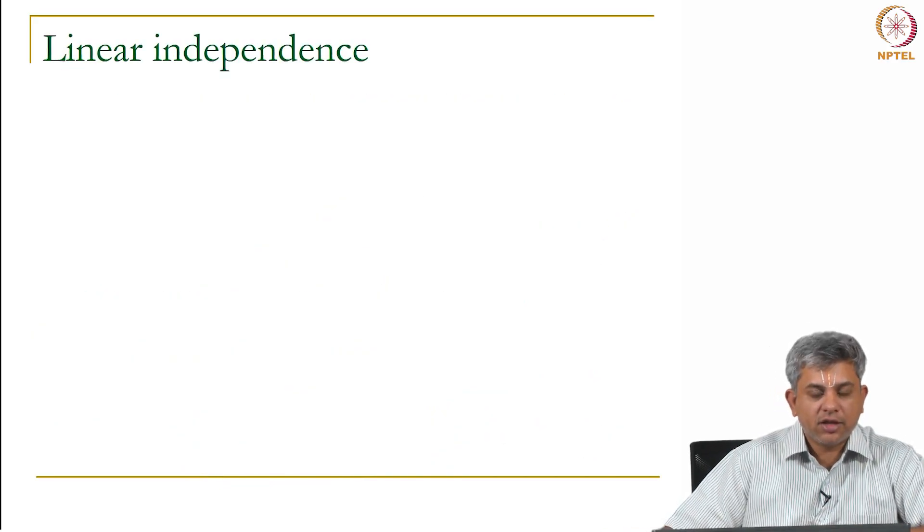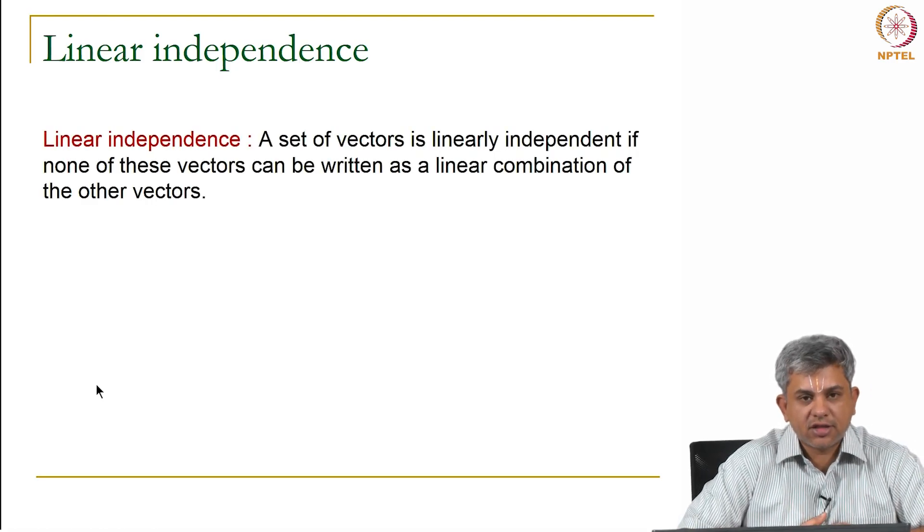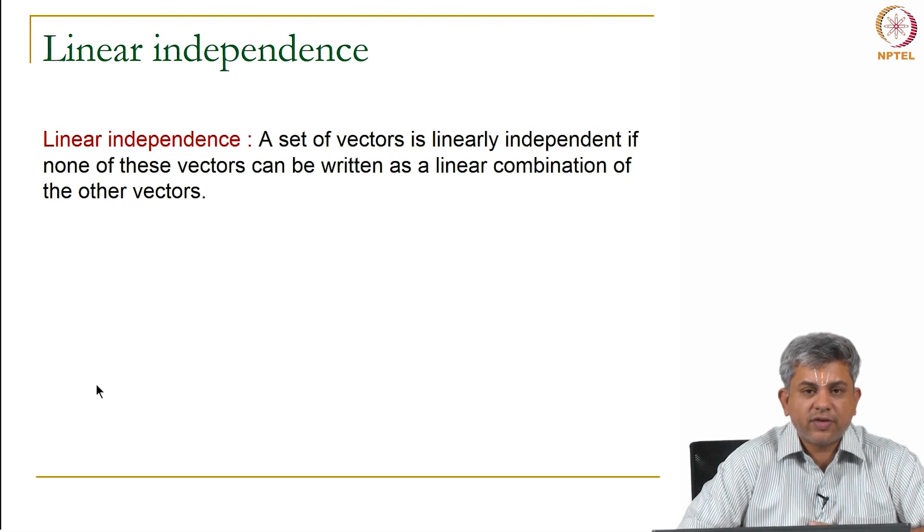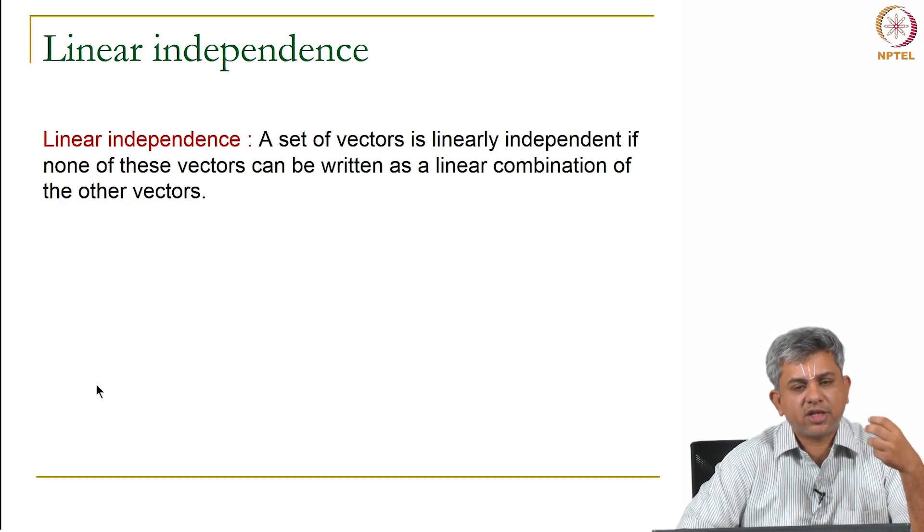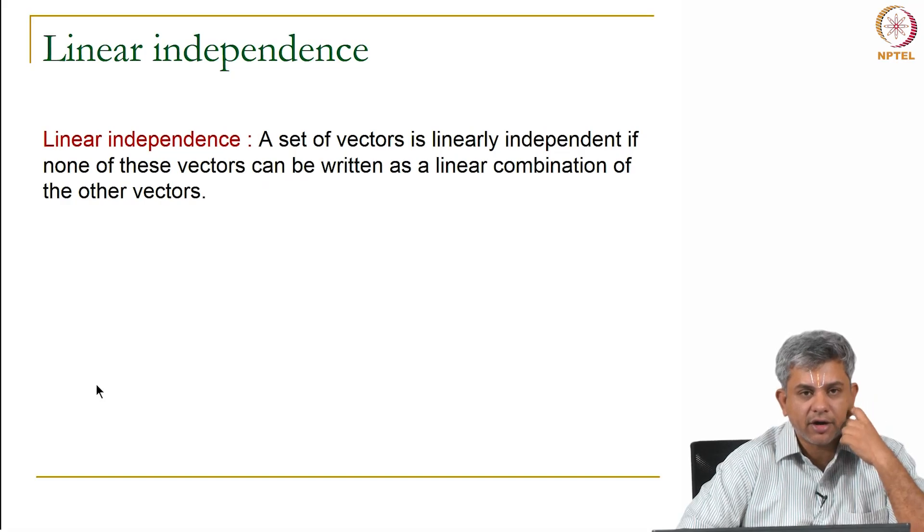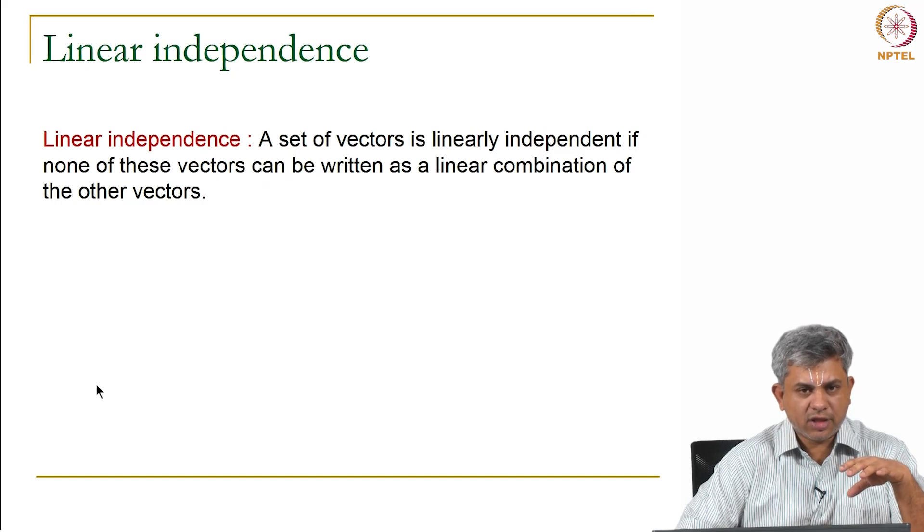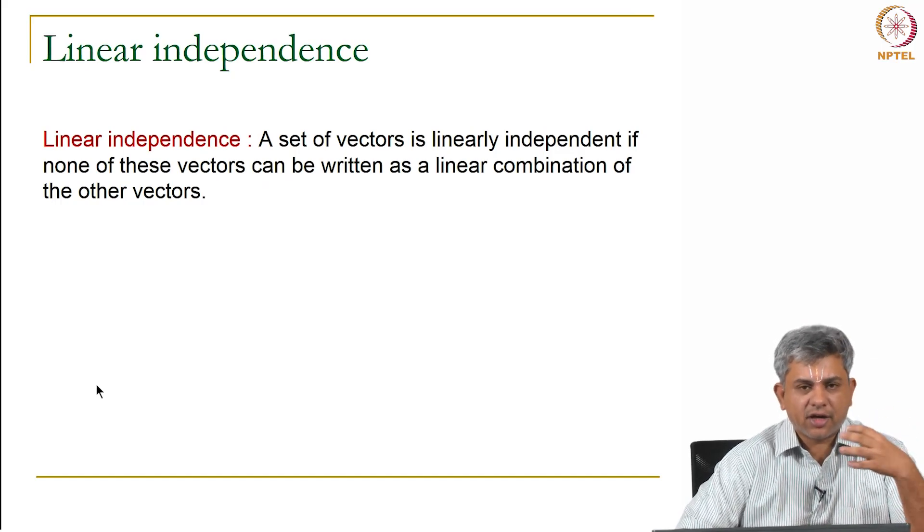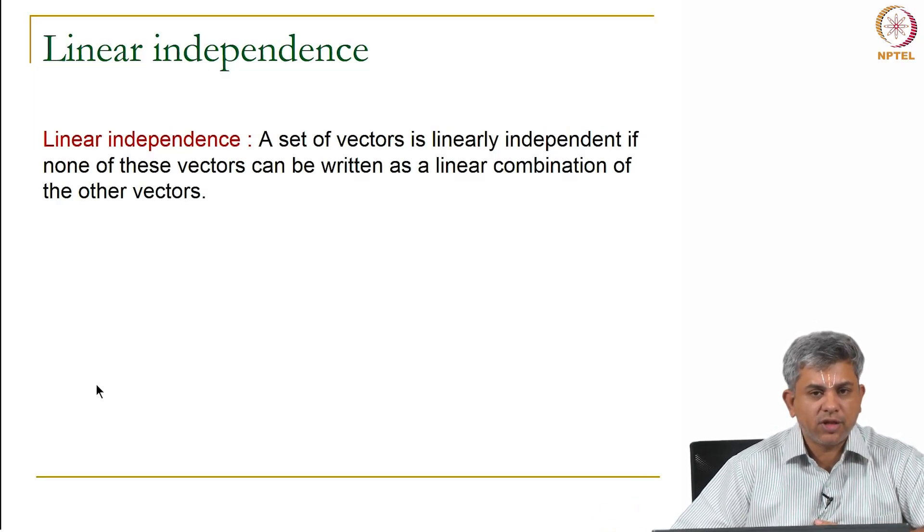The final idea in this video is that of linear independence. A set of vectors is defined to be linearly independent if none of these vectors can be written as a linear combination of the other vectors. These three ideas—linear independence, linear combination, and span—are actually very deeply related. You can treat them as three related ideas.